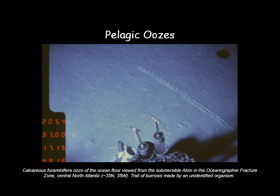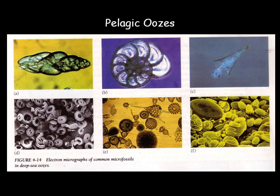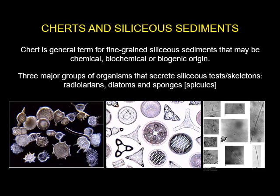These are present-day pelagic oozes viewed from the submersible Alvin in the oceanographic fracture zone, central North Atlantic. The long tray and some burrows were made by unidentified organisms. These are some micro-images of pelagic oozes viewed under the microscope. These are also examples of cherts and siliceous sediments. Chert is a general term for fine-grained siliceous sediments that may be chemically, biochemical, or biogenic in origin. Three major groups of organisms that secrete siliceous sediments or skeletons are radiolarians, diatoms, and sponges or spicules.